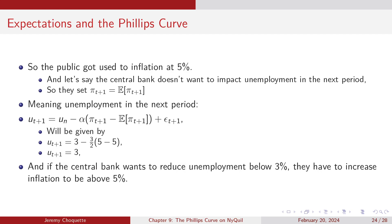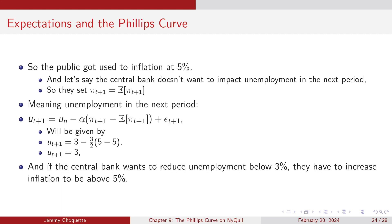Now the public is used to 5% inflation. If the central bank sets inflation equal to expected inflation at 5%, unemployment is back up at the natural rate of 3%. So to reduce unemployment below 3% again, they'd have to increase inflation above 5%. To lower unemployment again in period T+2, expected inflation is already 5%, so you need an inflation rate higher than 5%.